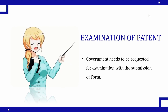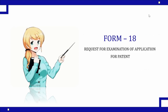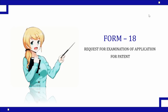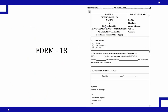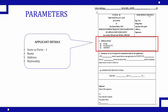To make that request, a form needs to be submitted instructing the government that your application needs examination. Form 18, which is the request for examination of application for patent, needs to be submitted to the government. Without it, the government won't start the examination, so it is a mandatory document after filing your application. It is basically a one-page document and today we are going to learn the parameters of the same. First is the applicant details.